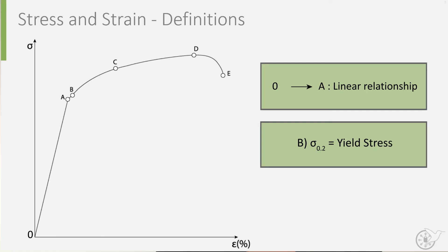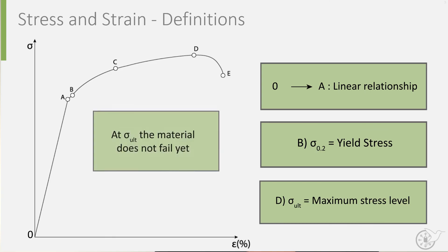All stress exceeding yield stress now causes plastic permanent deformation. So if we continue along the graph, you can see that we reach a maximum stress level in point D. This point is known as ultimate stress, and the maximal stress a material can withstand is denoted as sigma ultimate. This does not mean, however, that the material breaks at this point.